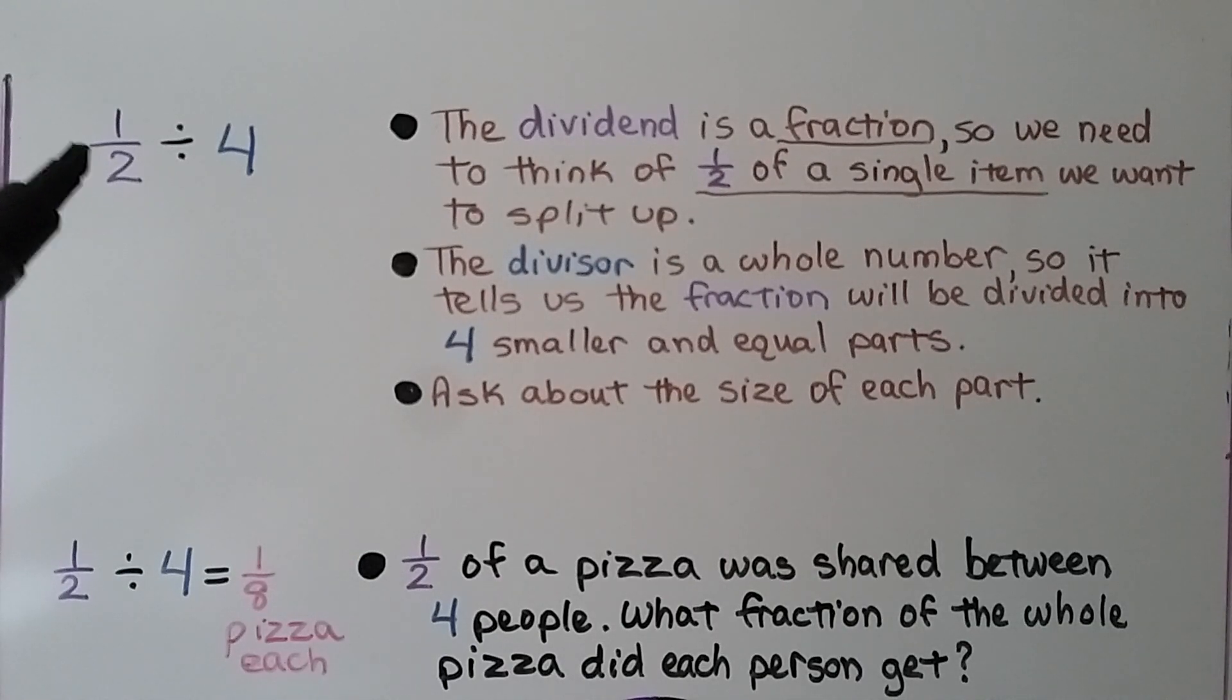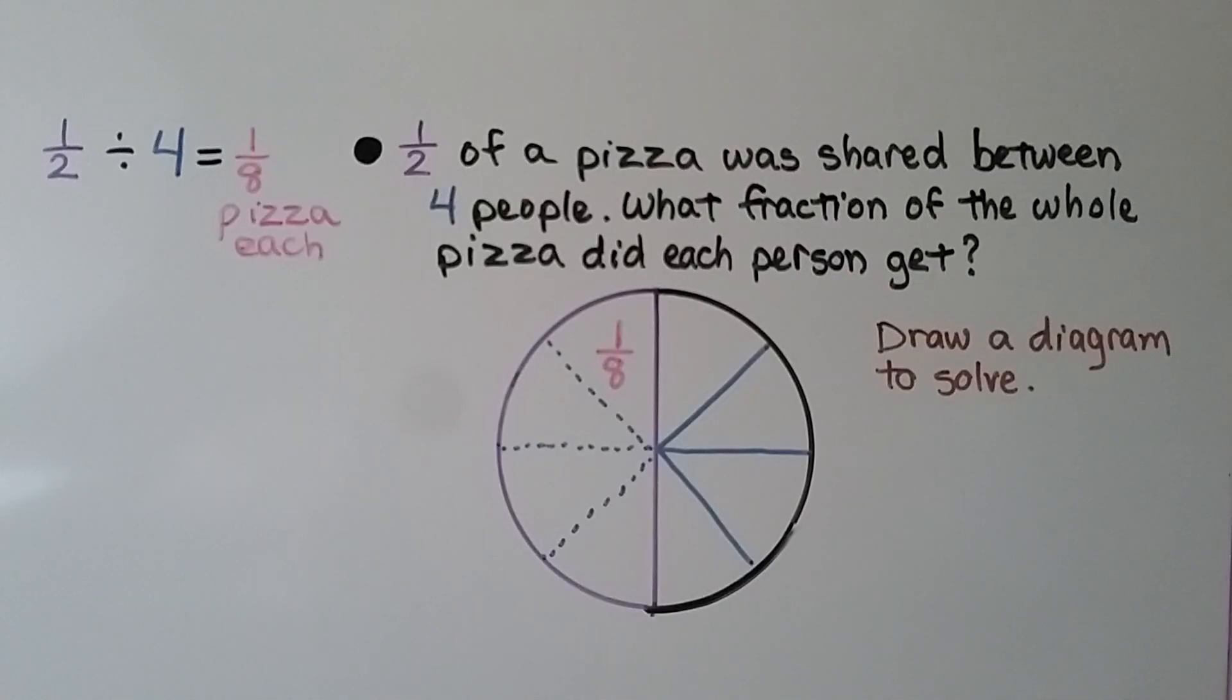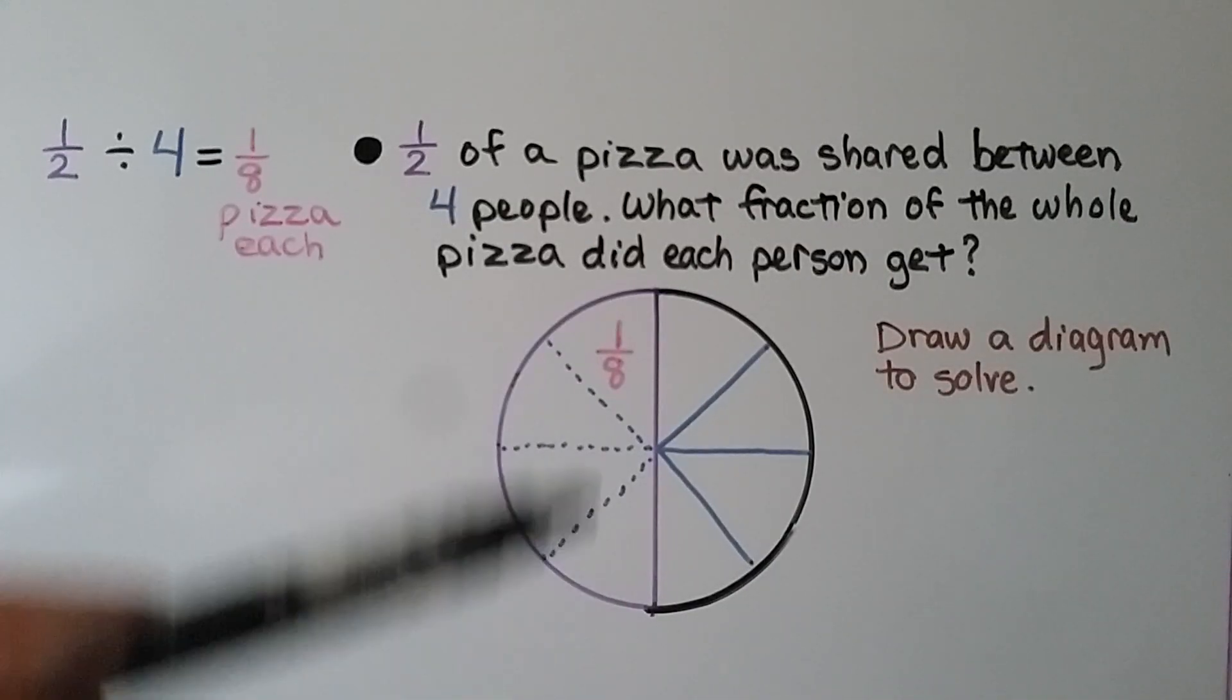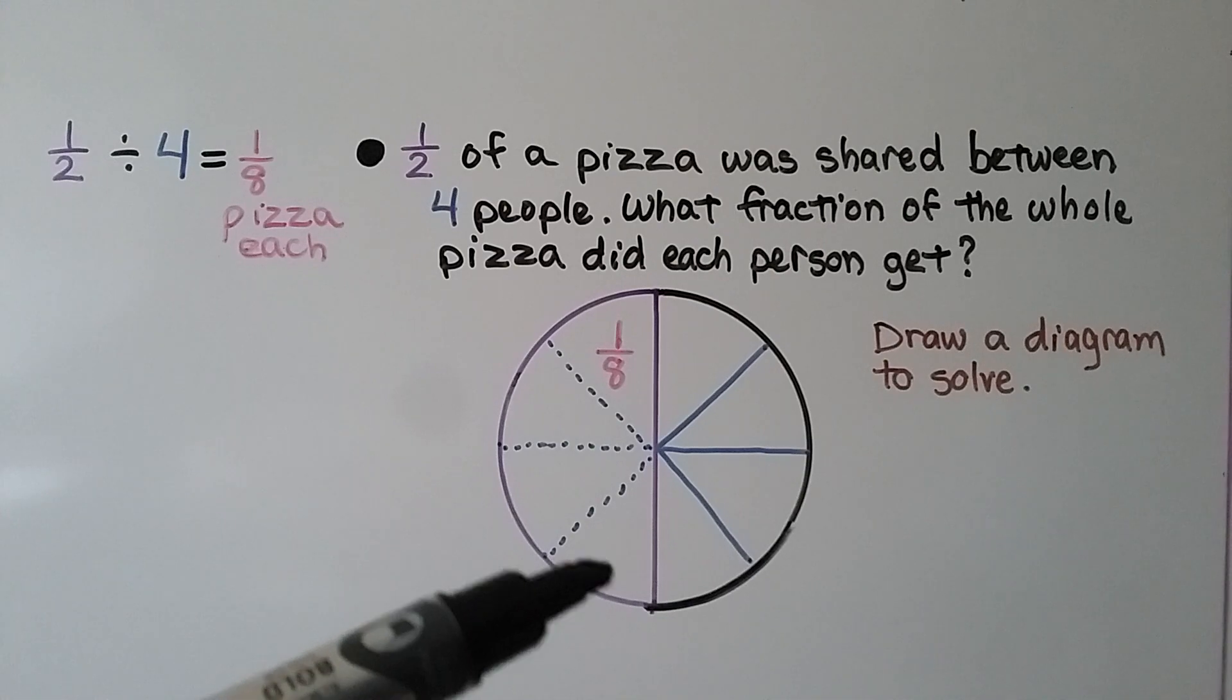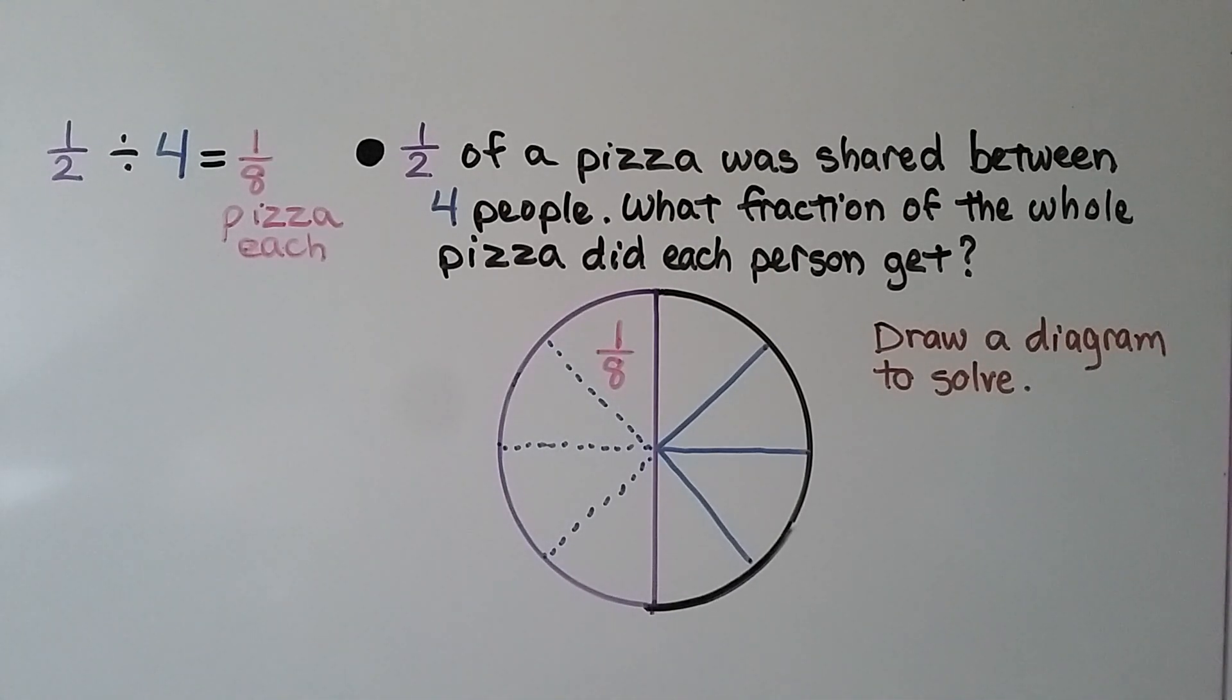Here we have a dividend as a fraction and our divisor is a whole number. The dividend is a fraction, so we need to think of half of a single item we want to split up. And the divisor is a whole number, so it tells us the fraction will be divided into 4 smaller and equal parts. Then we ask about the size of each part. So we could write half of a pizza was shared between 4 people. What fraction of the whole pizza did each person get? We draw a diagram to solve it. Here's half the pizza. We split it into 4 equal parts. 1, 2, 3, 4. And we can see that each slice would be 1 eighth of the whole pizza. So 1 half divided by 4 is equal to 1 eighth.